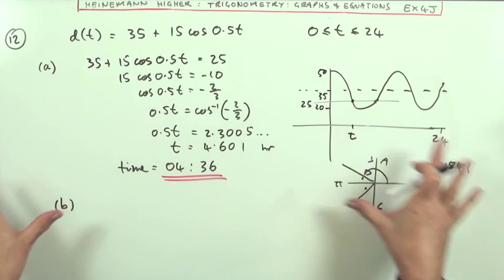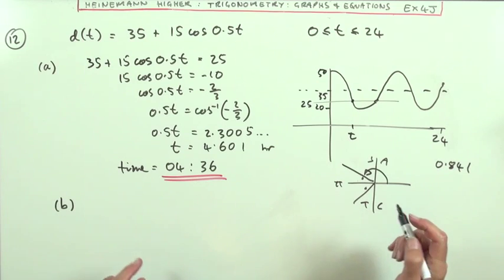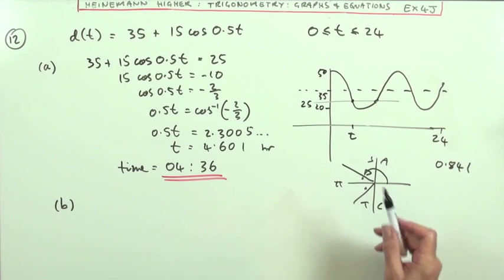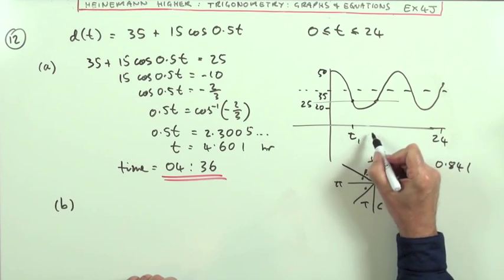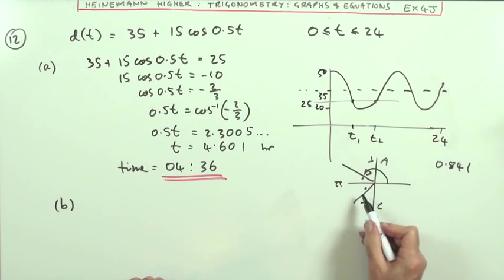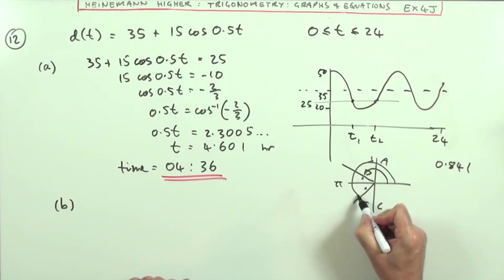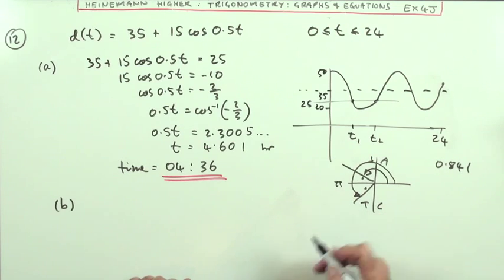Now part b, it's just the same calculation because it says, what time can it return? Well, it can't return, I'd have to sail away until this time here. That's t1, there's t2. Well, that's just the other one from that graph. That's going to be 0.841 beyond π.